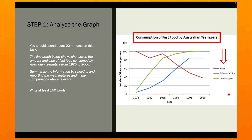What else do we have here? We also have a vertical line and a horizontal line, also known as axes — vertical axis and horizontal axis. The vertical axis gives us the number of times they ate fast food per year, so the numbers 40, 60, 80, and 100 stand for how many times per year Australian teenagers consumed fast food. On the horizontal axis, you're given a time span — it's between 1975 and 2000.